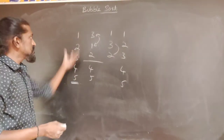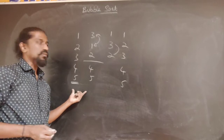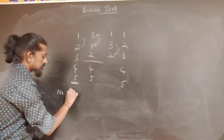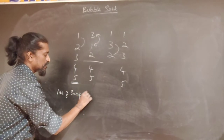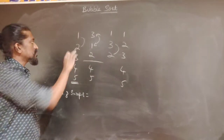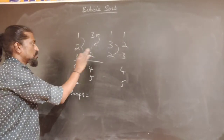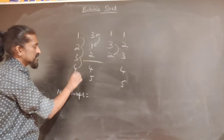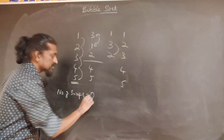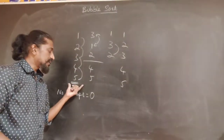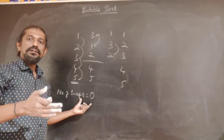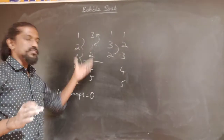If the input is already sorted — for example 1, 2, 3, 4, 5 — in the first pass we compare all adjacent pairs and perform zero swaps. After pass 1, if number of swaps = 0, we can immediately stop and conclude the elements are sorted without doing any further passes.